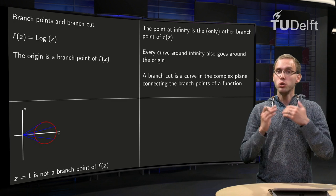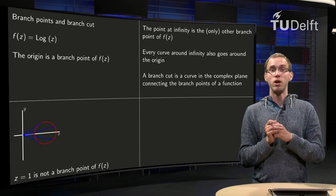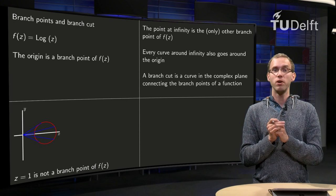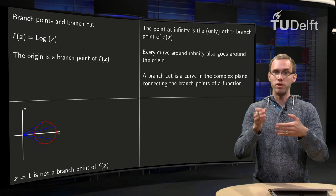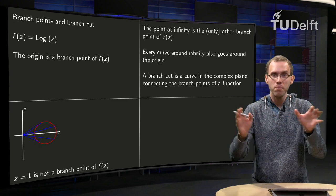So, do we have any other branch points for the log? We know 0 is a branch point, 1 is not a branch point, then you can do a similar argument for any point in the plane.